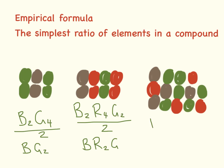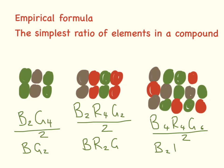Here we have brown 1, 2, 3, 4. The smallest number we can divide these by is 2, so we have brown 2, red 2, green 3.